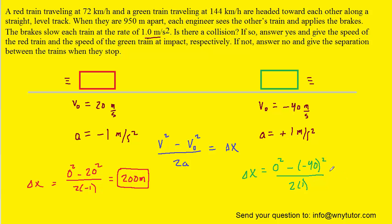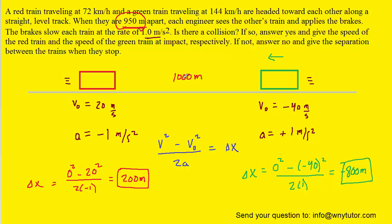When we compute this for the green train, we get negative 800 meters. It's negative, of course, because the green train is traveling to the left, so it should have a negative displacement. Notice that 800 meters of distance and 200 meters of distance is 1,000 meters. So there must be at least 1,000 meters between the trains in order for them to both be able to stop. But there's only 950 meters between them, according to the question.